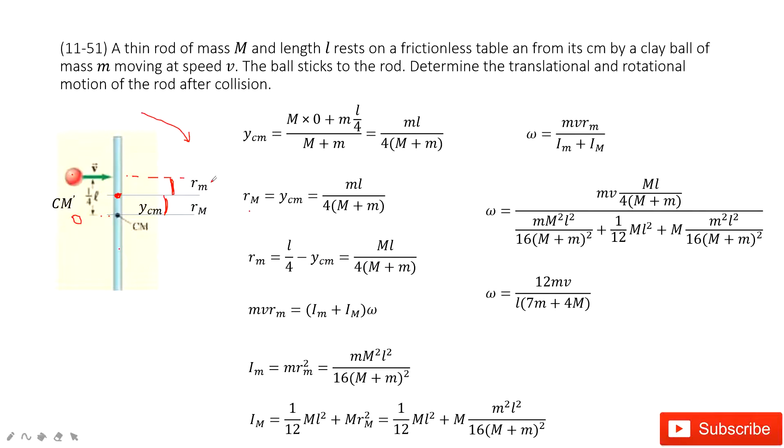Now we can see the angular momentum is conserved because no external force acts on this system. Initial angular momentum equals final angular momentum. Initially, only the clay has motion. And finally,